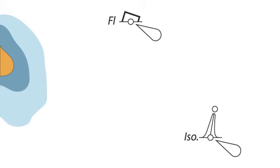Lights on buoys can flash with many different rhythms. These will be indicated on the chart by letters.